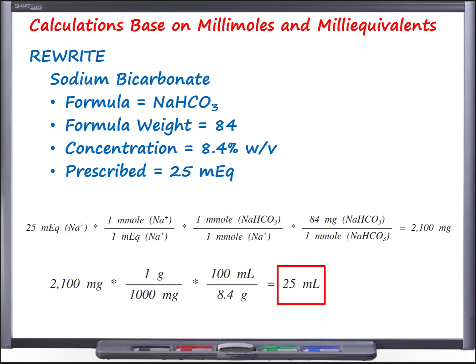To summarize the conversion path backwards: 25 mL of an 8.4% w/v injectable provides 2,100 mg of sodium bicarbonate. Converting milligrams to millimoles and then millimoles to milliequivalents gives us 25 milliequivalents. Setting up formulas so that units cancel one step at a time is the most effective way to correctly solve these questions.